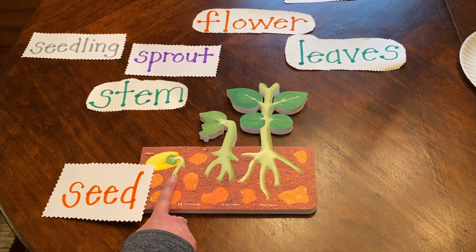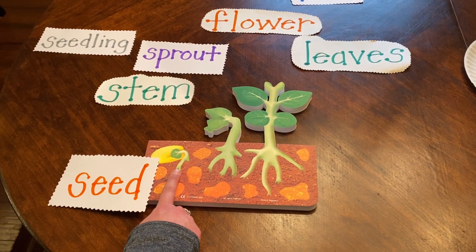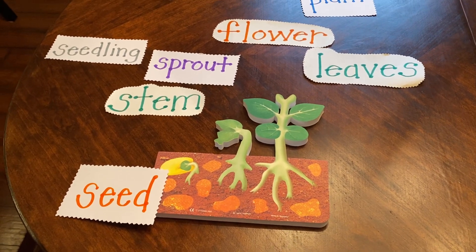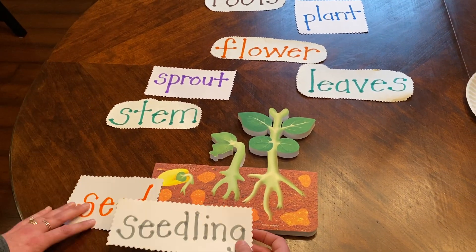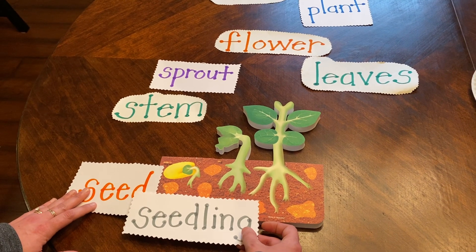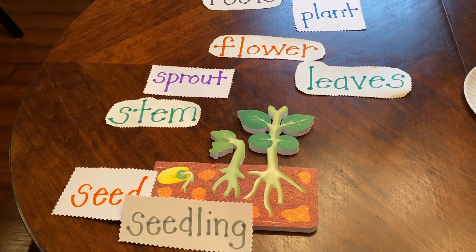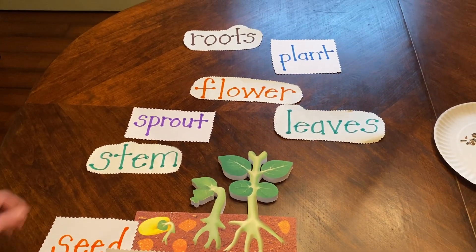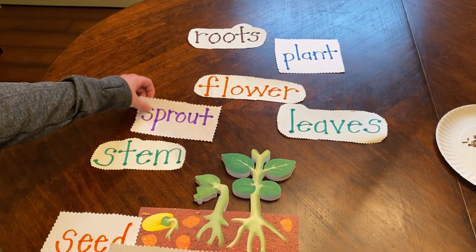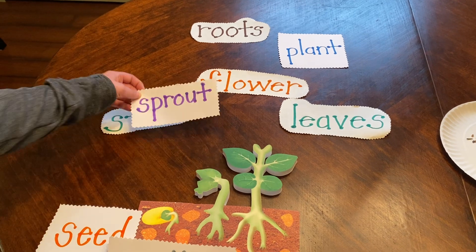And then when that little green shoot came out, what was that? That was the seedling. From there, we had our baby plant — that was known as the sprout.